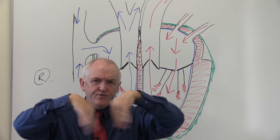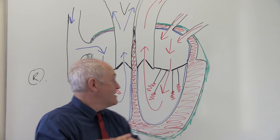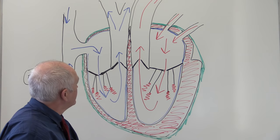So atrioventricular valves open and close one way, and semilunar valves open and close the other way. The valves are not actively contracting - they open and close as a result of pressure changes developed by the contraction of the heart and the venous return of the blood.